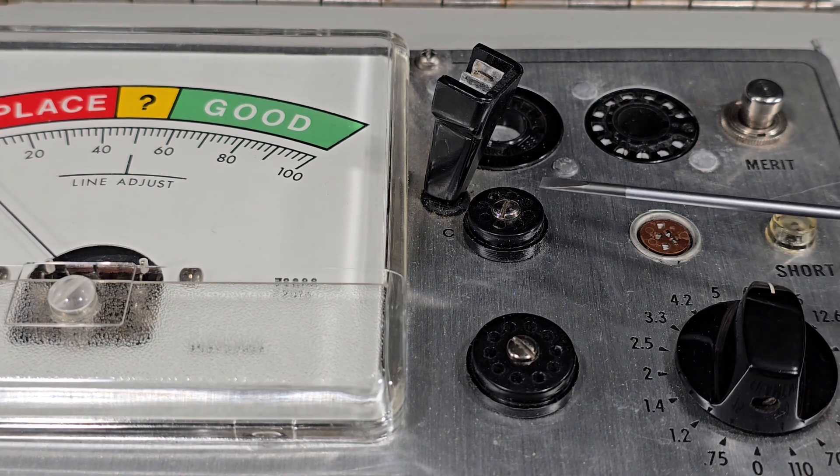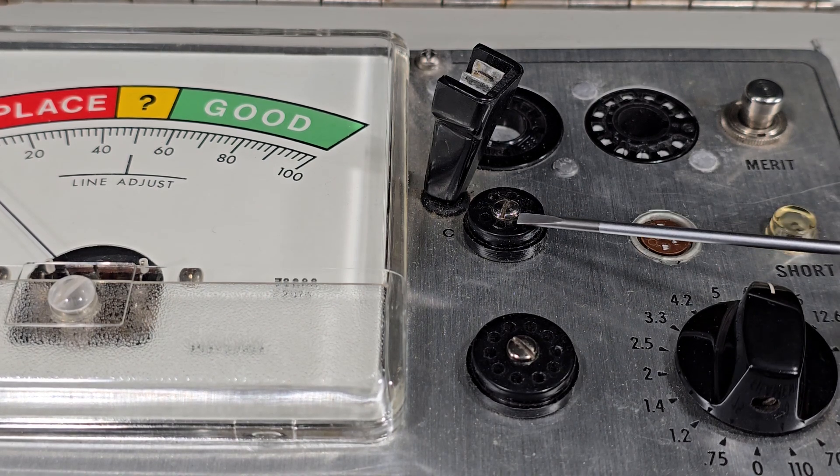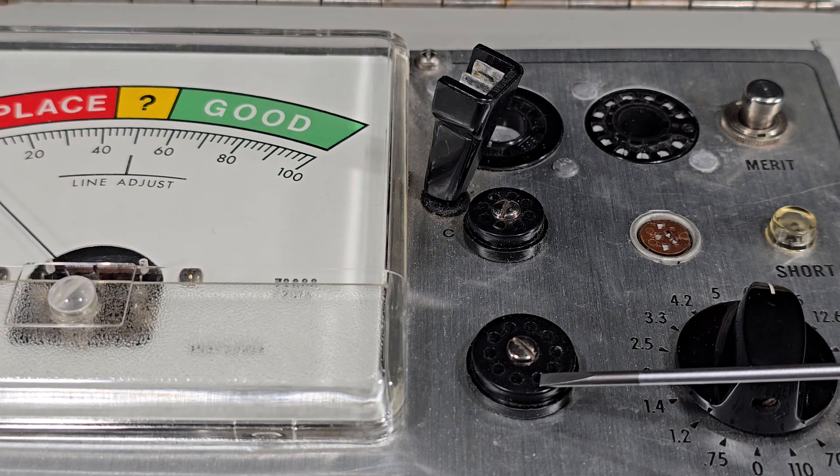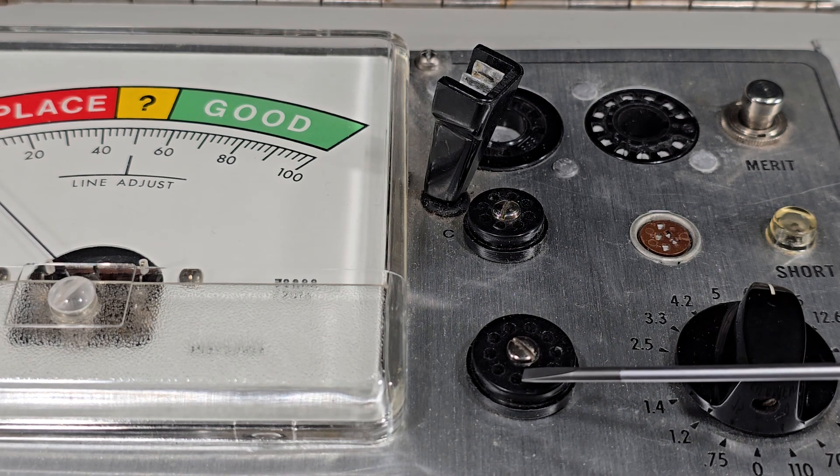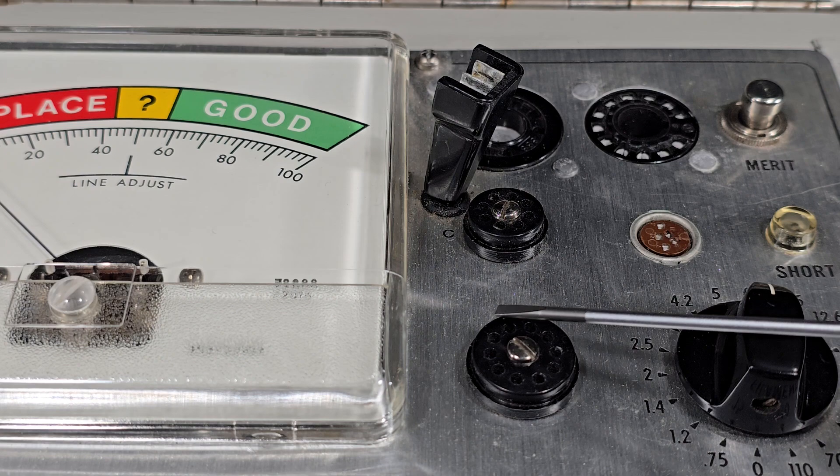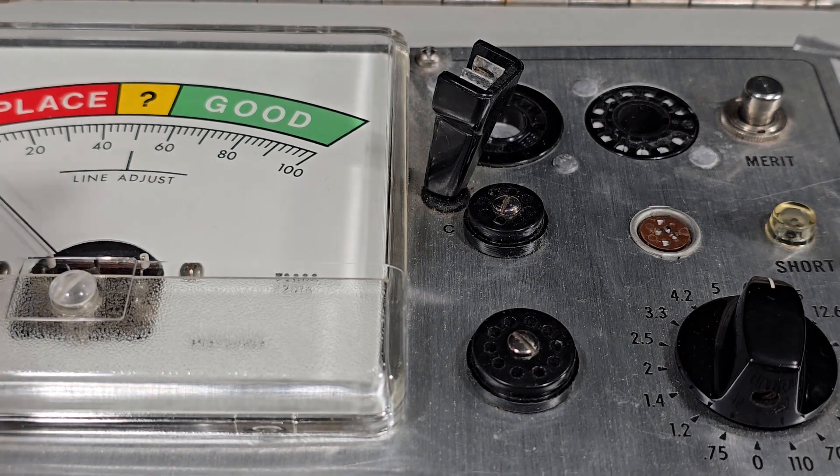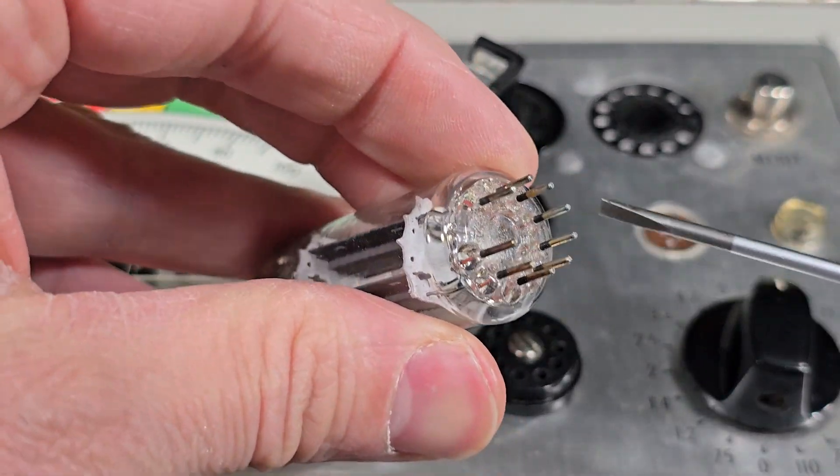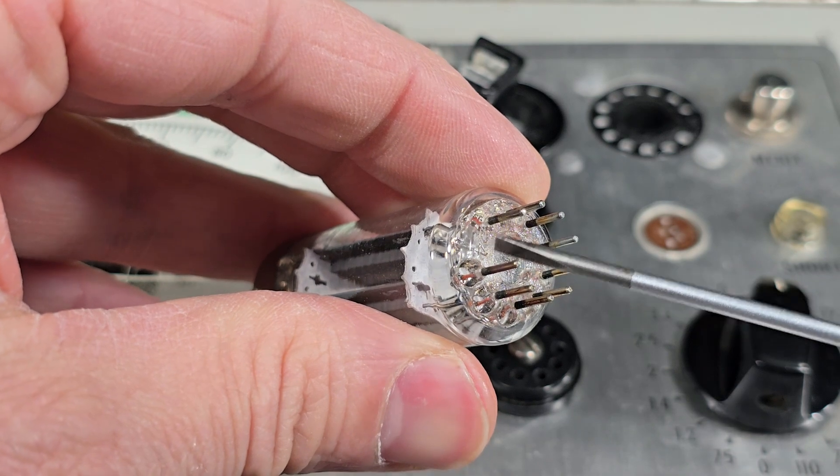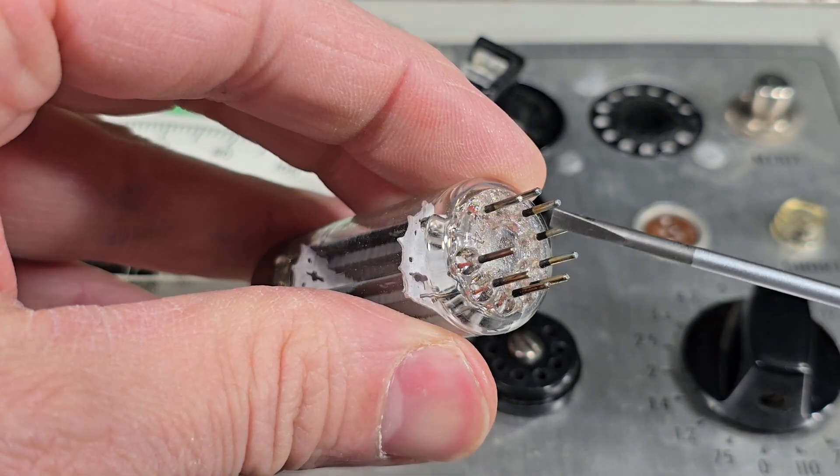This vacuum tube tester has two pin straighteners. One is here for seven pin tubes, one is here for nine pins. Although if you count the number of holes carefully, you'll see that there are 10. And it lacks this gap which would have been found on a normal socket which is used to index the tube into the right position.